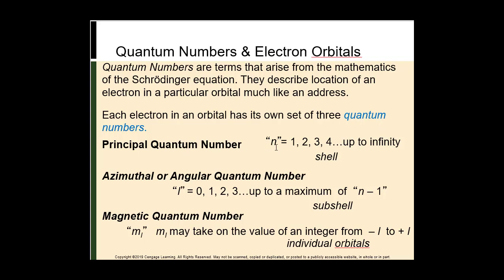The principal quantum number, n, can have any integer value from 1 to infinity. The value of n is the primary factor in determining the energy of an orbital and also defines its size — the greater the value of n, the greater the size of the orbital. In atoms having more than one electron, two or more electrons may have the same n value; these electrons are said to be in the same electron shell.